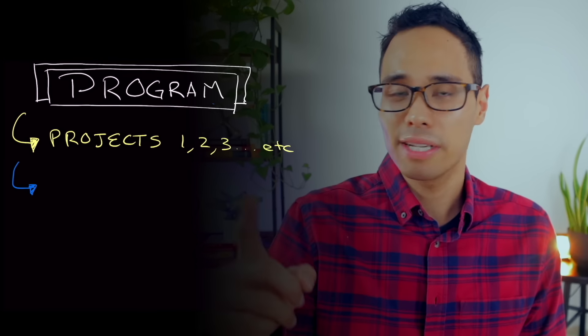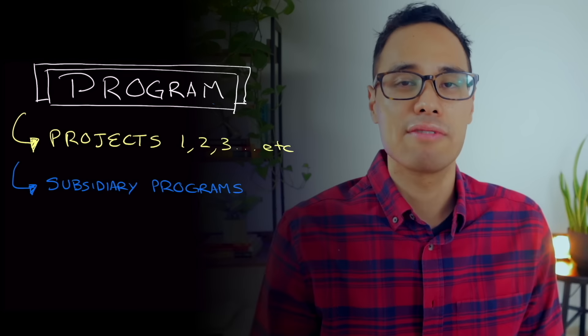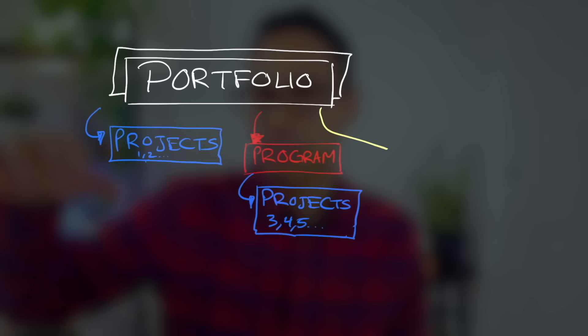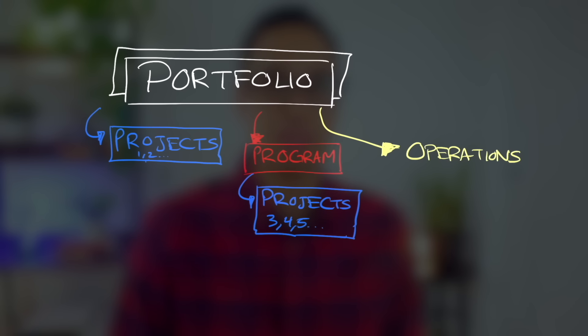A program is one level above a project. It oversees related projects and subsidiary programs so that opportunities and benefits can be achieved holistically by working on everything as a whole. When you take one step above the program level, you have a portfolio, which oversees the projects, programs, and operations together as a whole to meet the organization's strategic goals. A portfolio combines different initiatives underneath one big umbrella.